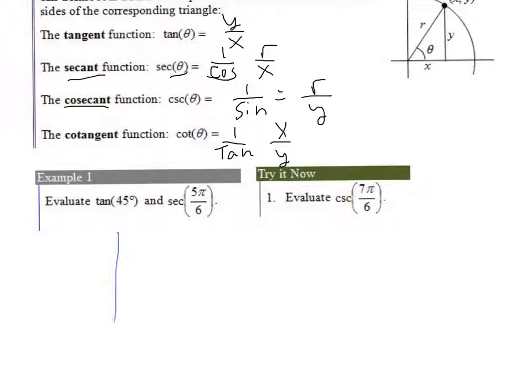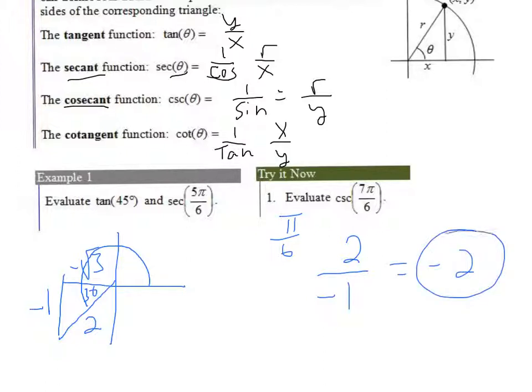So to do this, I know that 7 pi over 6 will end up about here. I know the reference angle is pi over 6, which is the same thing as 30 degrees. So that's negative 1, that's negative square root of 3, and that's 2. Now, cosecant is the reciprocal of the sine, or r over y, so r is 2, y is negative 1, and so that just becomes negative 2. Okay? So now go ahead and try those problems on the next page. I'll have the answers online for you to check. Thank you.